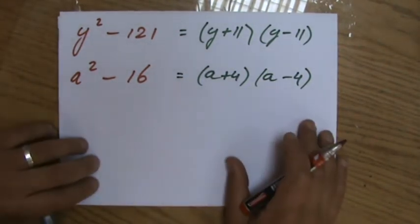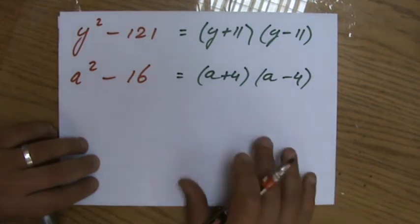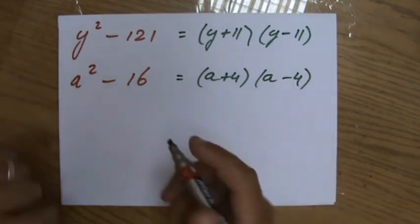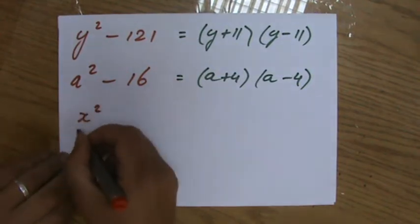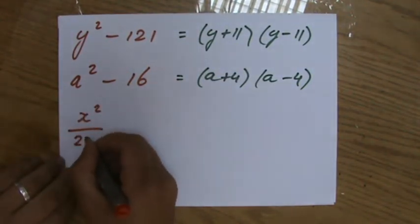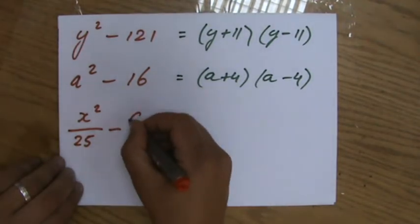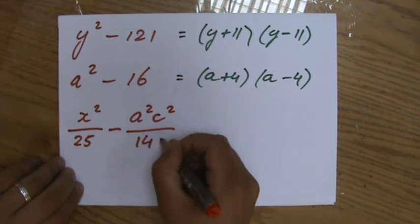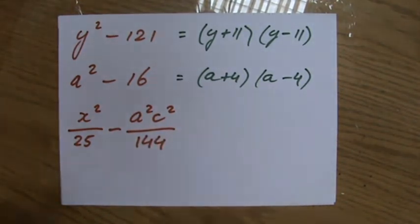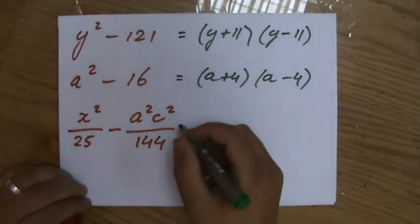And then, perhaps your teacher, and I'm one of those teachers, want to really make a question appear very difficult. So I can do like this. x squared over 25 minus a squared c squared over 144. And I'll ask my students, factorize this. And everybody will be like, yeah, that's easy.